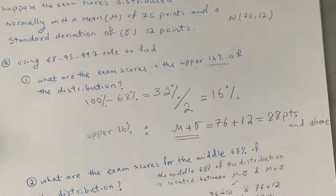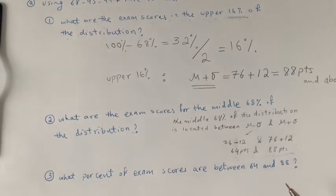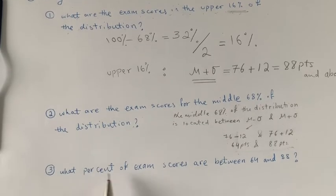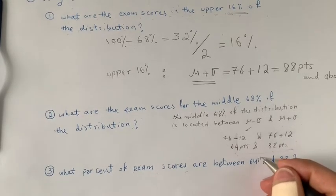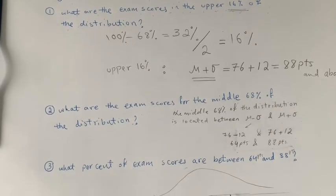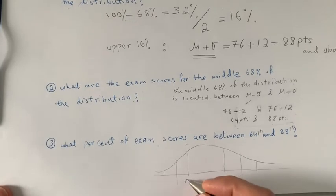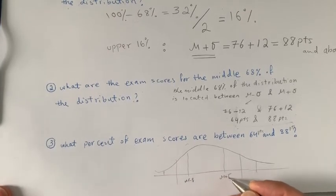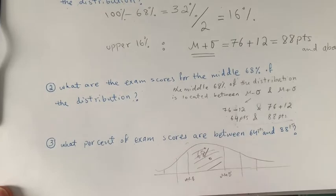Now the next question asks: what percent of exam scores are between 64 points and 88 points? If this is a normal distribution with these partitions — mu minus sigma and mu plus sigma — we know that between mu minus sigma and mu plus sigma we have 68% of our observations.